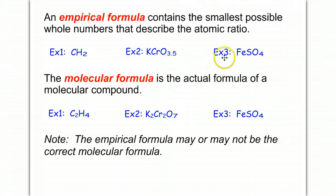And then lastly, example 3, we have iron(II) sulfate, FeSO4, and we'll notice that the molecular formula happens to be the same.